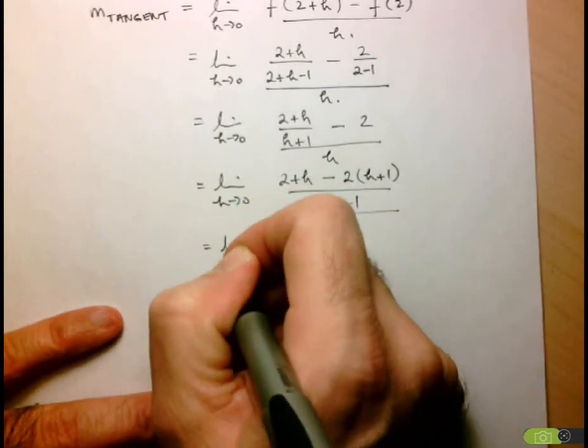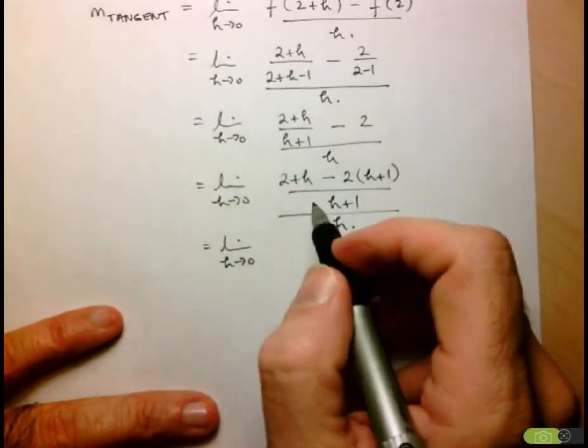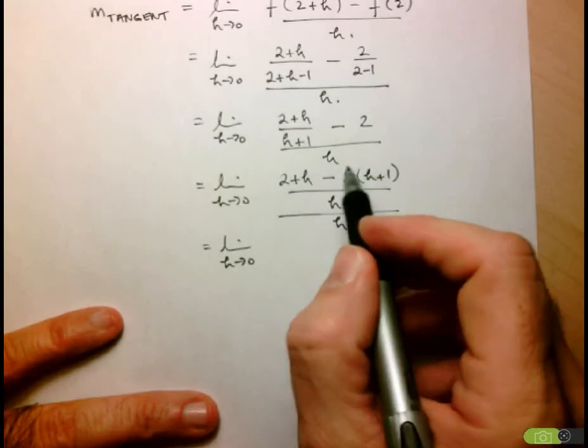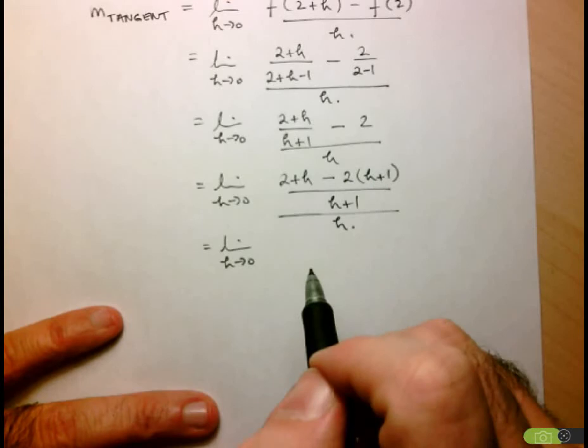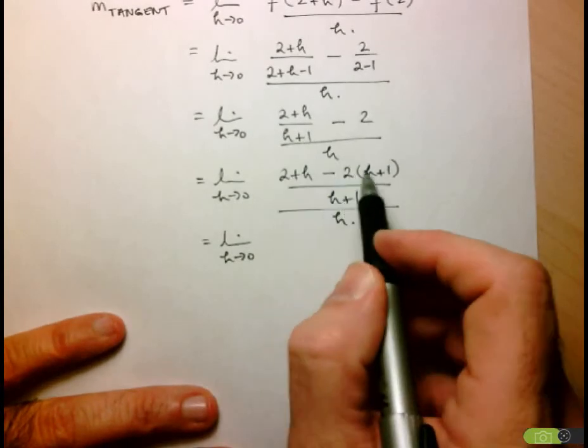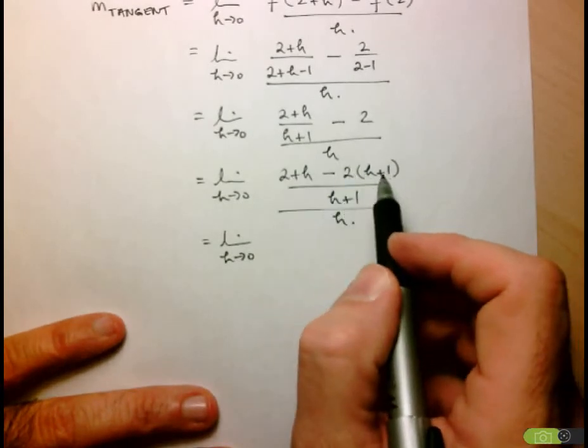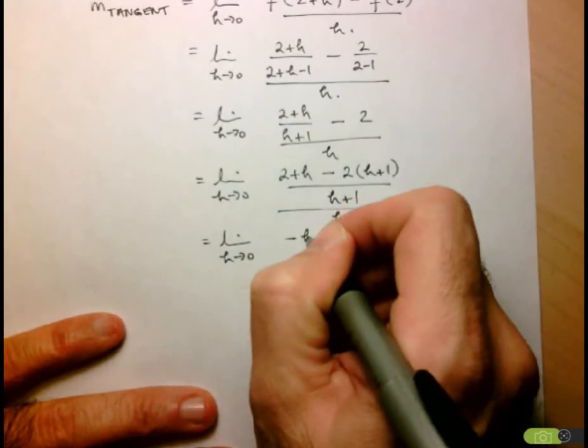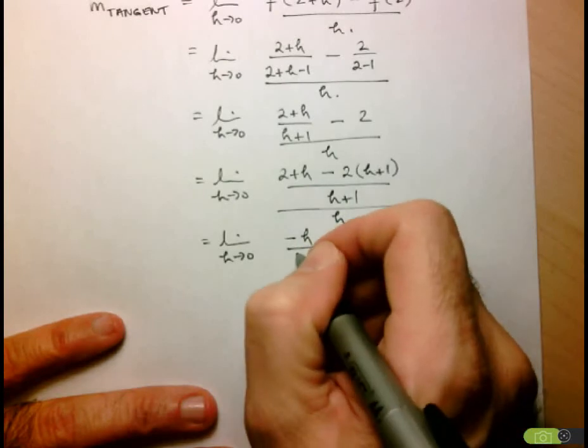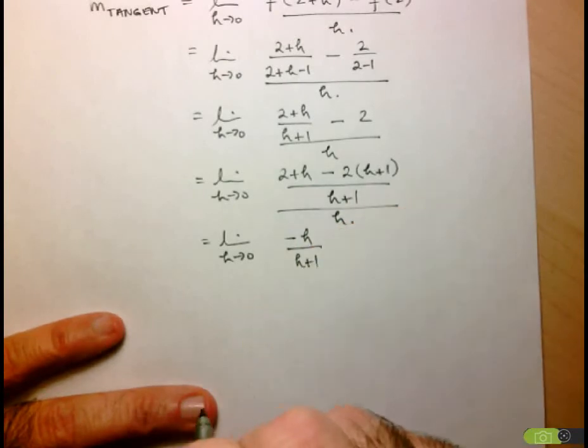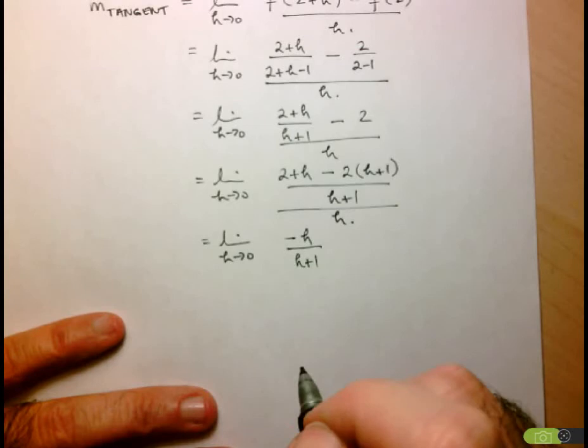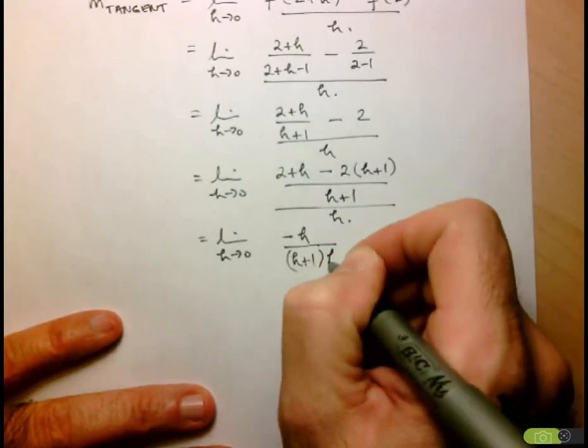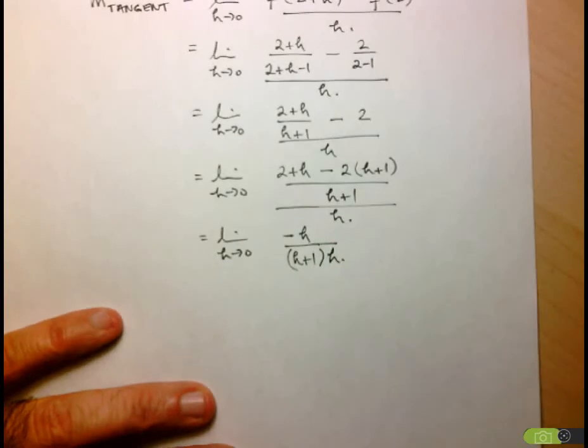We keep going, seeing where the algebra takes us. Here we have a minus 2h and a minus 2. So 2 minus 2 gives us 0, and then we have h minus 2h, so we've got negative h, and here we have h plus 1. Since this is just being divided by h, I can also just add that to the denominator here.